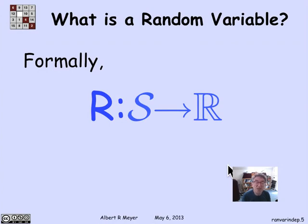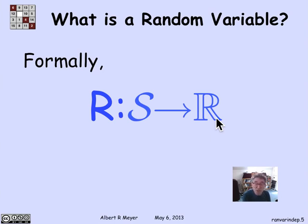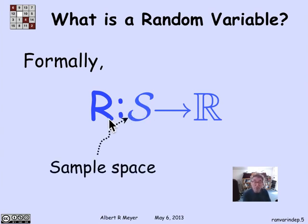Now we come to the formal definition. Formally, a random variable is simply a function that maps outcomes in the sample space to numbers. We think of outcomes as results of a random experiment with probabilities, and the random variable translates each outcome into a real number. So formally, a random variable is not a variable — it's a total function that maps the sample space to the real numbers.